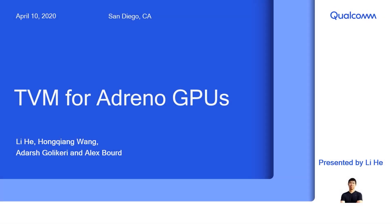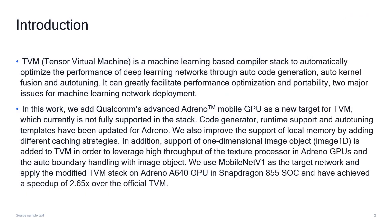In this poster, we present our work of enabling TVM for Qualcomm Adreno GPUs. TVM, or Tensor Virtual Machine, is a machine learning-based compiler stack to automatically optimize the performance of deep learning networks through auto-code generation, auto-kernel fusion, and auto-tuning. It can greatly facilitate performance optimization and portability, two major issues for machine learning network deployment.